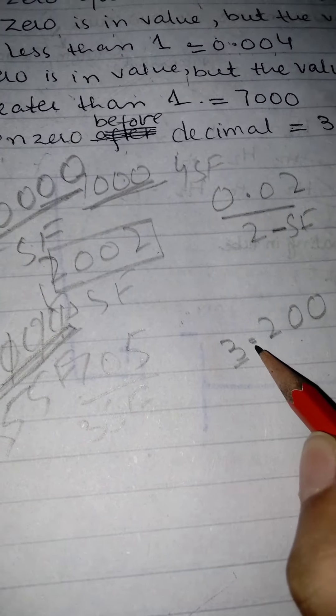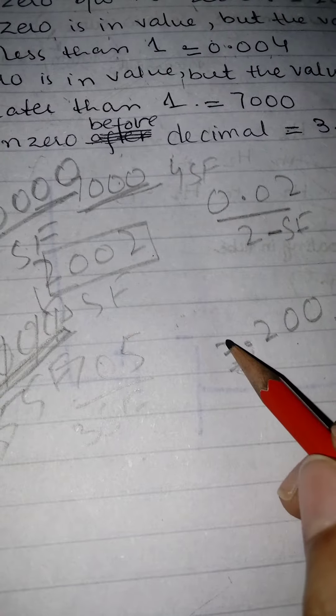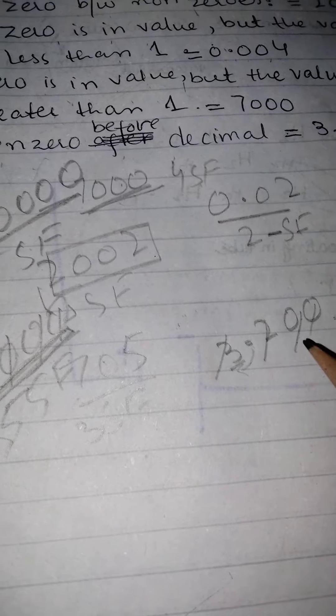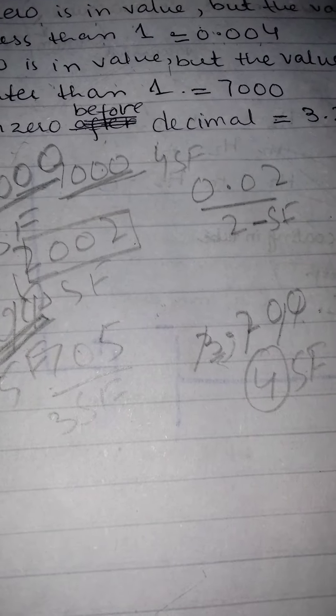value before the decimal point, so in this we have one, two, three, four - four significant figures in this.